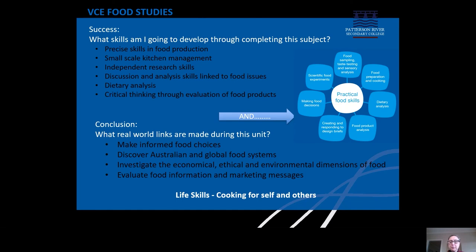In terms of the skills you will be developing, most importantly you are developing those food production skills. In addition, there's a lot of research and work involved in developing skills in learning how to find out information and how to be critical of that information. We look at things like the Australian Dietary Guidelines and how they impact the types of decisions we make about food. Throughout your life you're going to be making decisions about food, and those decisions will be influenced by things like the environment, political systems and the goings on around our world. We help you navigate the types of information we are bombarded with every day when it comes to food.